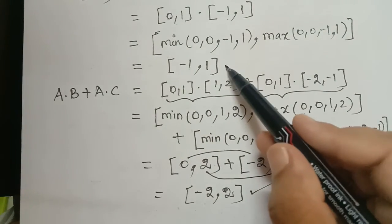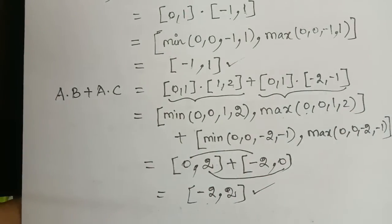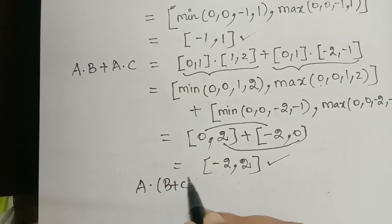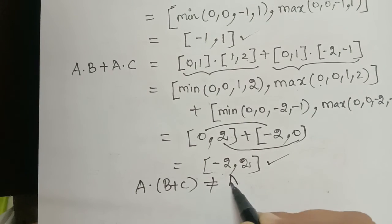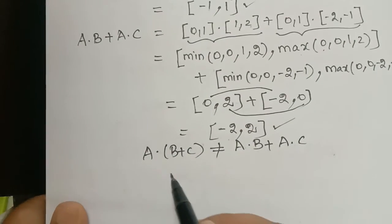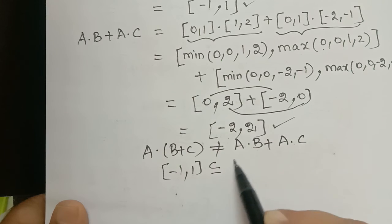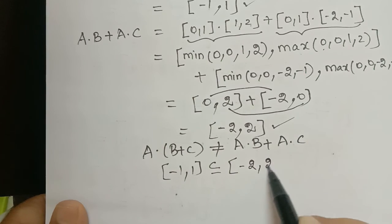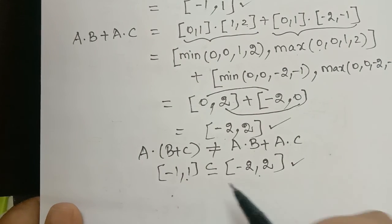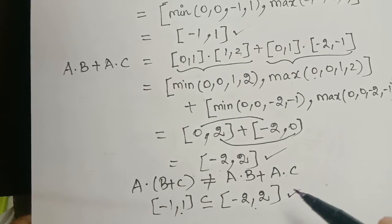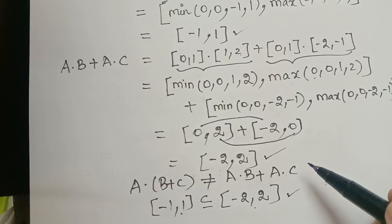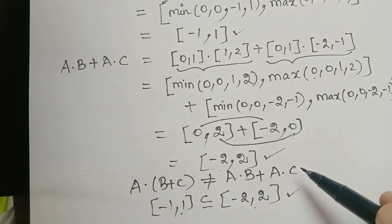Here we got [-1, 1] on the left-hand side and [-2, 2] on the right-hand side. So a·(b+c) is not equal to a·b + a·c. But we can observe that [-1, 1] is a subset of [-2, 2]. So the sub-distributive property holds, but the distributive property does not hold. Hope you have understood the proof. In our next video, let us see a few more properties on this topic. Thank you.